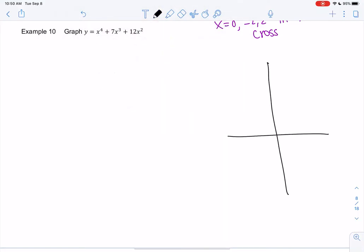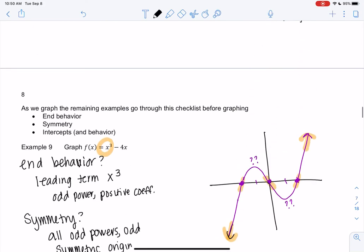So I'm just going to sketch a graph on the side. We have x to the fourth plus 7x cubed plus 12x squared. I'm just going to go through this checklist again.